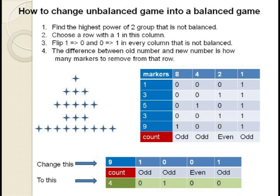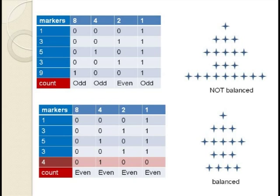We change the 1 in the 8's column to a 0, change the 0 in the 4's column to a 1, the 2's column is fine, so we leave it at 0, and finally change the 1 in the 1's column to a 0. So the number we would like in our last row is 0, 1, 0, 0, which is just 4. In order to change 9 to 4, we take 5 markers from the last row. Now our rows have 1, 3, 5, 3, and 4 markers, and you can see the game is again balanced.